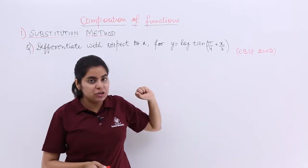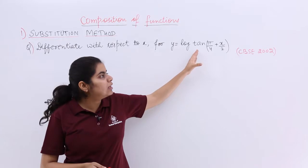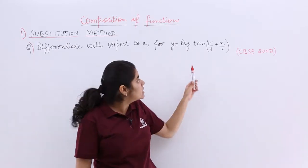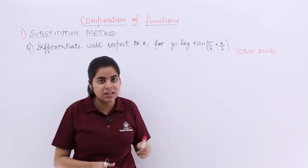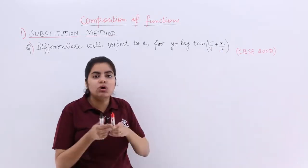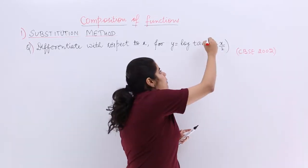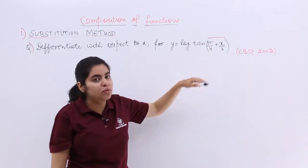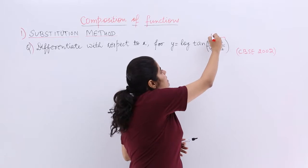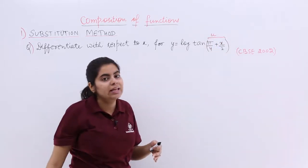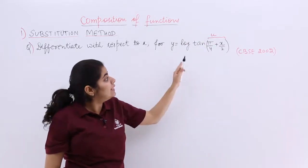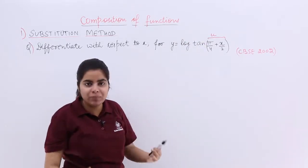Now, y is the given function and you see this is not very easy. Rather, it has many nested functions. The first which you can see complete is pi by 4 plus x by 2. Let's name pi by 4 plus x by 2 suppose as u. Then you see your question changes to y equals log tan u.